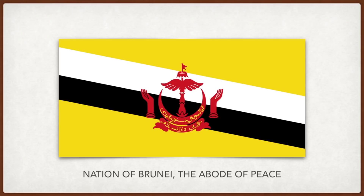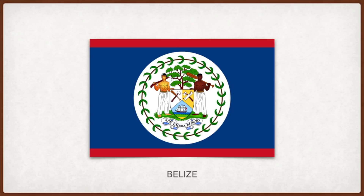Belize: in the center a mahogany tree represents the wooded areas of the country. Two woodcutters — one of Native American ancestry and one of African ancestry — are depicted holding an axe and paddle. Also depicted are other woodcutting tools. Below the shield are the words 'Sub Umbra Floreo' — 'I flourish in the shade.' The blue comes from the People's United Party and the red from the United Democratic Party. The 50 leaves encircling the center recall the year 1950, when opposition to British rule began.